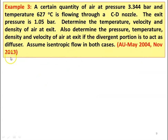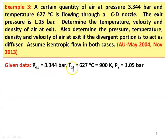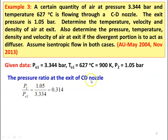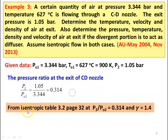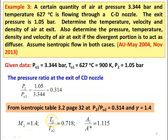Example number 3, from May 2004 and November 2013 question papers. A certain quantity of air at a pressure of 3.344 bar and temperature 627 degree Celsius is flowing through a convergent-divergent nozzle. The exit pressure is 1.05 bar. Determine the temperature, velocity, and density of the air at exit; also determine pressure, temperature, density, and velocity of the air at exit if the divergent portion is to act as a diffuser. Assume isentropic flow in both cases. We are given P01 equal to 3.344 bar, T01 equal to 627 degree Celsius which is 900 Kelvin, and P2 equal to 1.05 bar. Pressure ratio at the exit: P2 by P02 equal to 1.05 divided by 3.344 equal to 0.314. From isentropic table 3.2, page number 32, at P2 by P02 equal to 0.314 and gamma equal to 1.4, we take M2 equal to 1.4, T2 by T02 equal to 0.718, A2 by A* equal to 1.155.